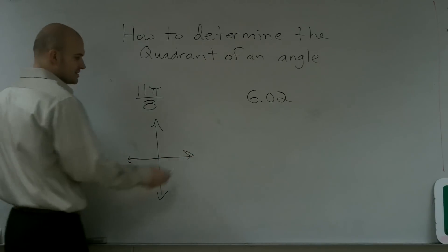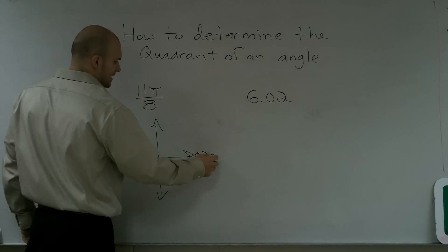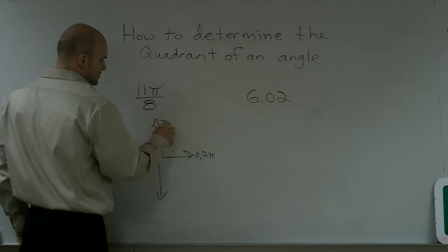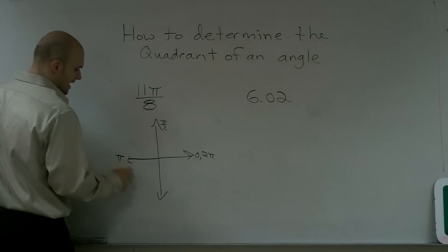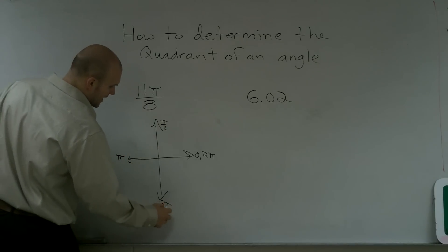Now, when given the quadrants, we've gone over this. Again, we have 0 and 2π. This is π over 2. This is π. This is 3π over 2.